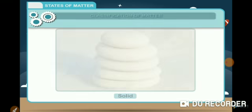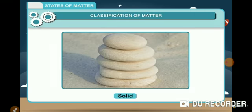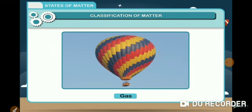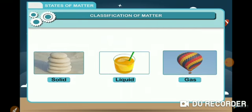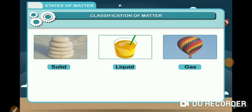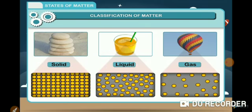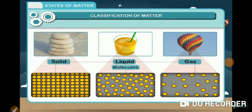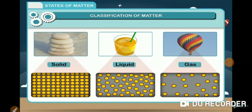Classification of matter. In nature, matter exists in three forms. Solid, liquid and gas. All three forms of matter is made up of very small particles which exist independently. These particles are called molecules. The arrangement of molecules provides shape and volume to any matter.